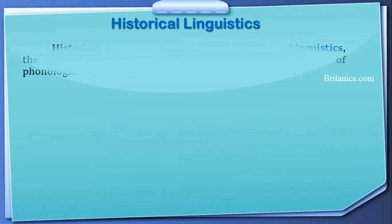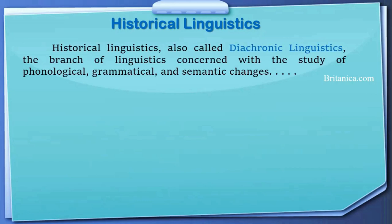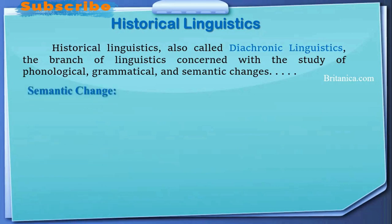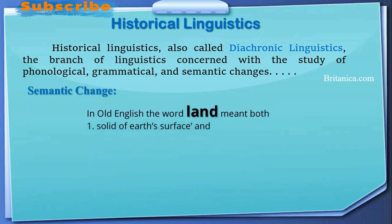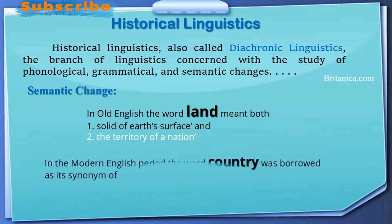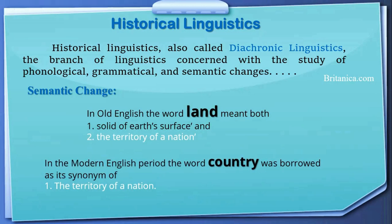This definition is taken from Britannica.com. Historical linguistics is also called diachronic linguistics. We already have talked about diachronic linguistics in previous lectures. This branch of linguistics is concerned with the study of phonological, grammatical, and semantic changes. For example, a semantic change: in Old English, the word 'land' meant both the solid surface and the territory of a nation. In the Modern English period, the word 'country' was borrowed as a synonym for 'territory of a nation.' These semantic changes are part of historical linguistics, or diachronic linguistics.